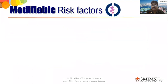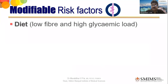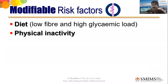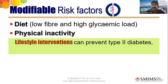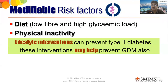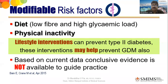The modifiable risk factors relevant to diet are low fiber, high glycemic load, and physical inactivity. Lifestyle interventions can prevent type 2 diabetes, and these interventions may help prevent GDM also. However, physical activity cannot be very strenuous during pregnancy. When you talk about diet, it becomes confusing because so many types exist. Let's see what the Cochrane review found: 11 different dietary advisors were assessed with six different comparisons.